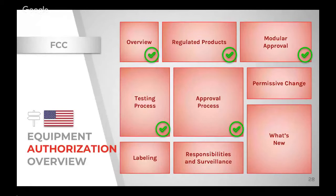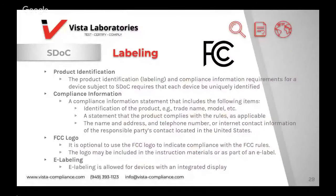Under the SDOC, labeling requirements include: a unique product identification such as a model number or serial number; compliance information statements that the product complies with the applicable rules; and the name, address, and contact information of the responsible party. The FCC logo is optional and can be included in the user manual or as part of an e-label. E-labeling is allowed for devices with integrated displays. Importantly, the user manual must contain a statement cautioning the user that changes or modifications not approved by the responsible party can void the user's authority to operate the equipment.